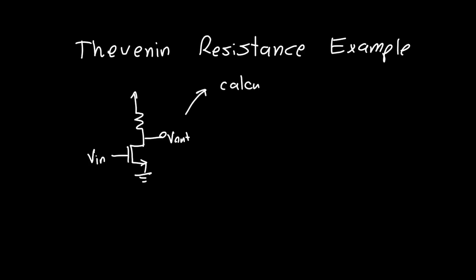In this video we're going to do a Thevenin resistance example. We're going to take a simple amplifier - a MOSFET common source amplifier where we've got the input here V_in, the output here V_out, and we want to calculate this resistance RD.